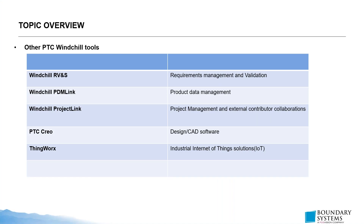We've gone through the different tools in Windchill: PDM Link, Project Link, and Creo. There are other tools also included in Windchill, such as Windchill RV&S (or Windchill Integrity), which is used to manage requirements, create validation processes, and manage the software part of a product. There is also a tool called ThingWorx, an IoT tool that helps you monitor the product once it's out in the field, get feedback from the product in the market, and use that information to build the next phase of the product better.